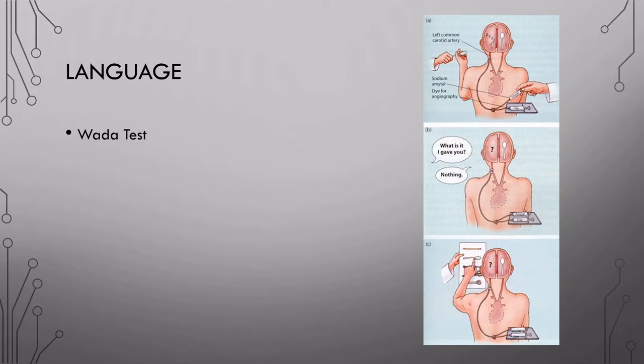Amobarbital produces rapid and brief anesthesia. Once given, the patient is quickly given tests related to language processing and memory. If the patient can't talk in the middle of the WADA test, this indicates that the language center in the brain is in the left hemisphere.